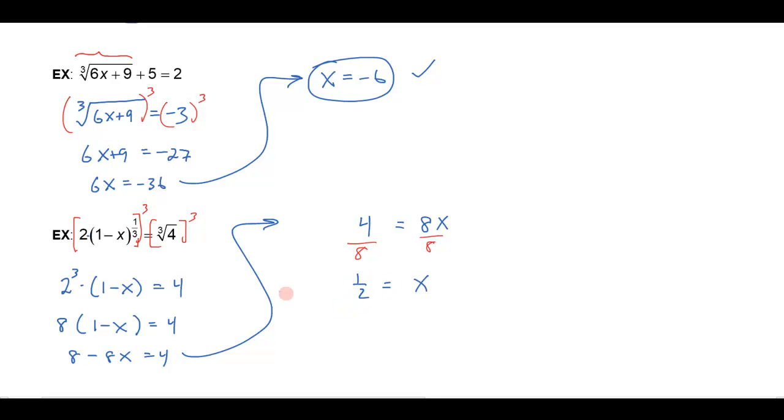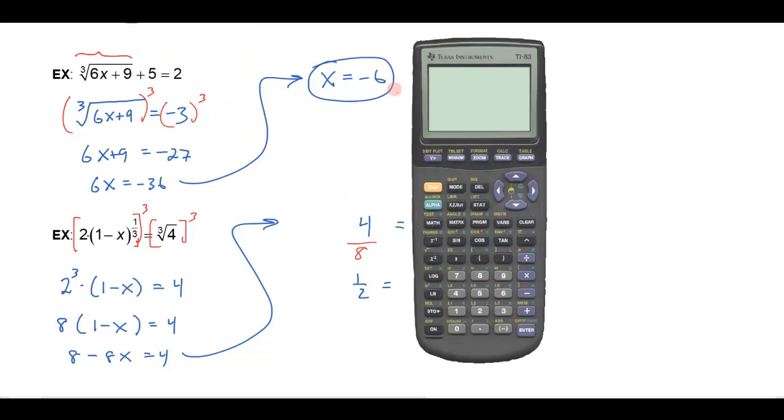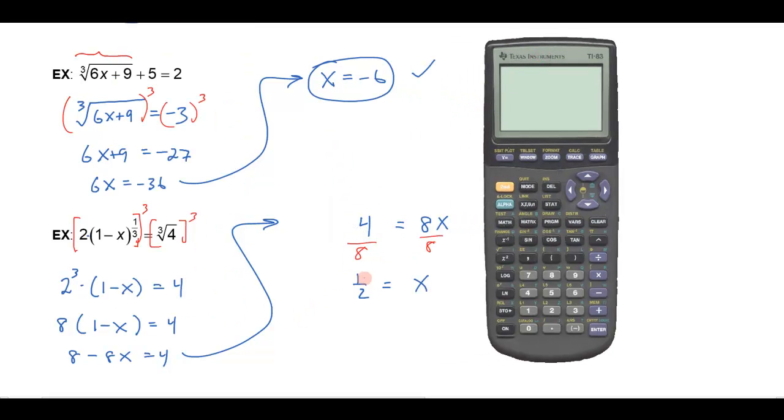I wonder if that will work out. Let's check it on our calculator. So if I plug a half in here, I would take 2 times 1 minus 0.5. There's 1 minus a half. And I want to raise that to the one-third power. So let's raise that to the one-third power like that. And that gives me this nasty decimal.